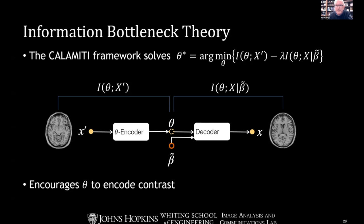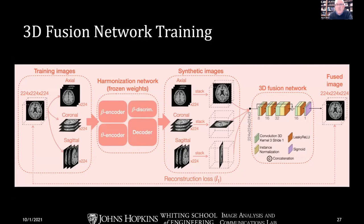On the 3D aspect: once the 2D part of the network is trained, Leon Ray added a fusion network to optimize combining images processed separately — axial, coronal, and sagittal — when producing a full 3D image.